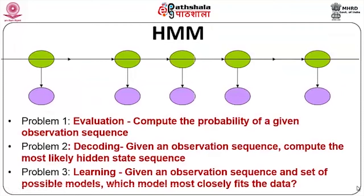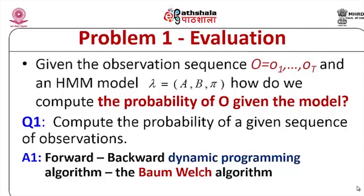The three issues are: evaluation, decoding, and learning. For evaluation, given the observation sequence O1 to OT and the model lambda (with all transition, emission, and initial probabilities known), we want to compute the probability of that sequence given the model. This is done by the forward-backward dynamic programming algorithm, called the Baum-Welch algorithm.